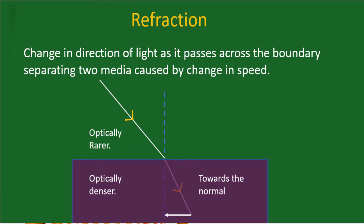The incident ray is making an angle i, and this is the reflected ray making an angle r. The incident ray, reflected ray, and normal — this plane is the plane of the board — all lie on the same plane. The second law of reflection states that the incident ray, the reflected ray, and the normal at the point of incidence all lie in the same plane.